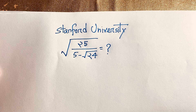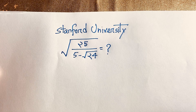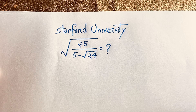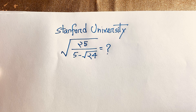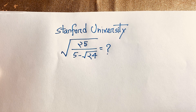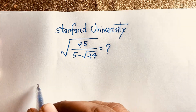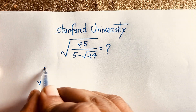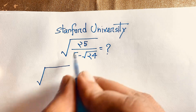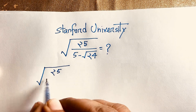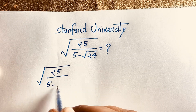Hello everyone. How to solve this radical math question: square root of 25 over (5 minus square root 24) is equal to what? How to simplify this math Olympiad question? It is a nice radical math Olympiad question.